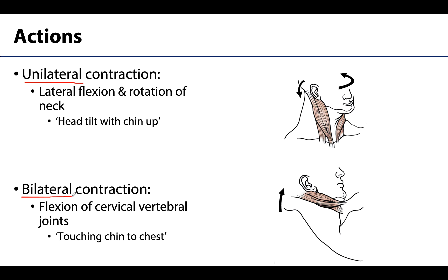With unilateral contraction, you get lateral flexion — in the coronal plane, think of the head trying to meet the shoulder on the same side — as well as rotation, with the chin moving up. Putting these together, you get a head tilt with the chin facing up, kind of like looking at the ceiling. With bilateral contraction, you get flexion of the cervical vertebral joints — think touching your chin to your chest. There are a few other synergistic movements, but you are not responsible for those.